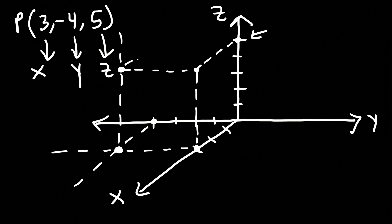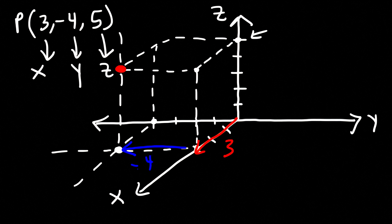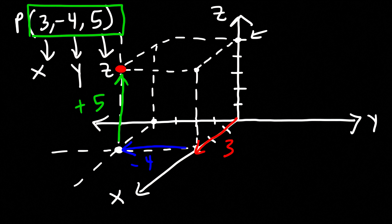You can draw a three-dimensional rectangle to visualize the result. The point we want is approximately in that region — we traveled 3 units along the positive x-axis, 4 units parallel to the negative y-axis, and 5 units parallel to the z-axis, giving us the point 3, negative 4, 5. That's basically it for this video — an introduction to graphing in three-dimensional systems. Thanks for watching, and feel free to subscribe and turn on the notification bell.